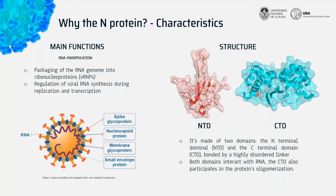The N protein's main functions are related to RNA manipulation: packaging the RNA genome into ribonucleoproteins and regulating viral RNA synthesis during replication and transcription. Regarding protein structure, it is made of two domains — the N-terminal domain, which we worked with, and the C-terminal domain — bonded by a highly disordered linker. Both domains can interact with RNA, but the CTD is the only one that participates in the protein's oligomerization.